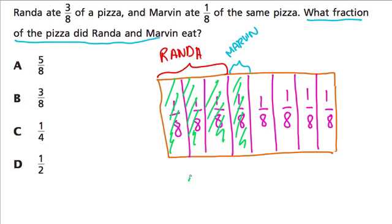A quick way of doing this is to add the fractions. Three-eighths was eaten by Rhonda, one-eighth was eaten by Marvin. That's four-eighths, right? We just add the numerators.